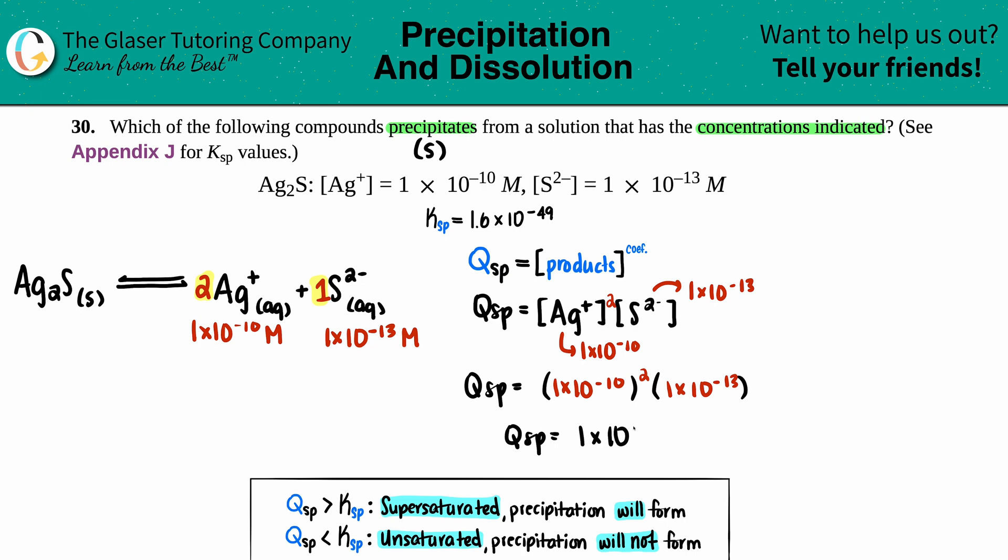Now the next thing is we just compare. So the Qsp value, 1 × 10⁻³³, and we compare that with the Ksp, which was what we found in the back of the textbook, 1.6 × 10⁻⁴⁹.